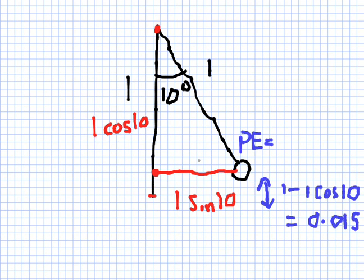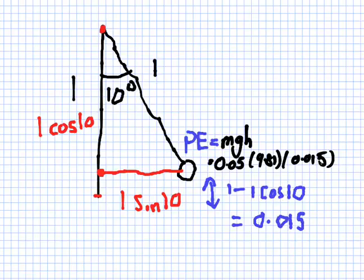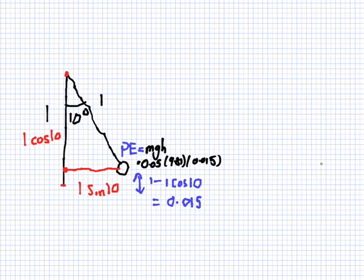Oh, my pen's working. So potential energy is MGH, which here would be 0.05, 9.81, and then 0.015. Okay. So what did you get there for that please?